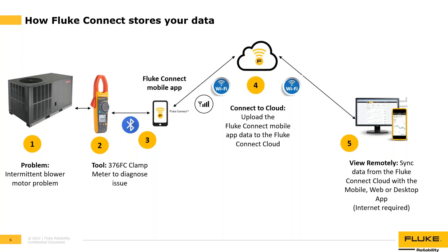Here's an overall flow of how data is stored and moved through the various systems. In step one, say you have an intermittent blower motor problem with a rooftop HVAC unit. In step two, you grab your 376 FC clamp meter and connect it to the blower motor. In step three, the tool communicates readings to the Fluke Connect mobile app via Bluetooth. In step four, the app uploads the readings to the Fluke Connect cloud for permanent storage. If the phone is out of range, data is stored locally until it reconnects to a cell or Wi-Fi signal.